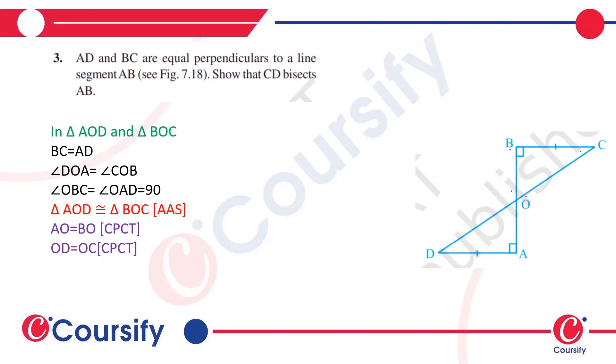BC equals AD as given in the question. Angle DOA equals angle BOC because of vertically opposite angles. Angle OBC is 90 degrees and angle OAD is also 90 degrees.